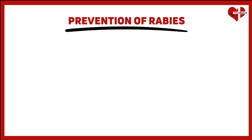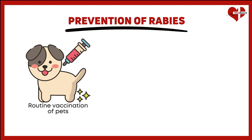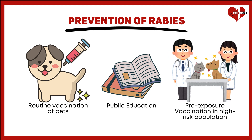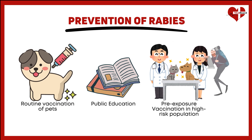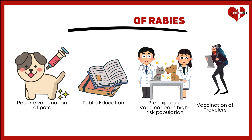Prevention is key when it comes to rabies. Routine vaccination of pets is one of the most effective strategies to control the spread of the virus. Public education on avoiding contact with wild or stray animals is equally important. In high-risk populations, like veterinarians and wildlife workers, pre-exposure rabies vaccination is recommended. For travelers visiting regions where rabies is endemic, vaccination may also be advised.